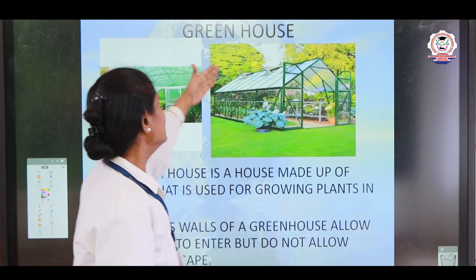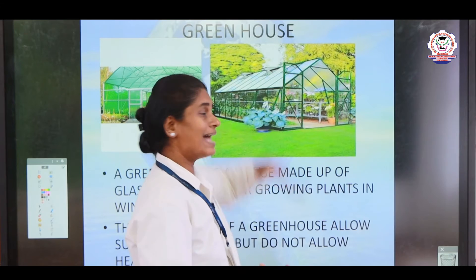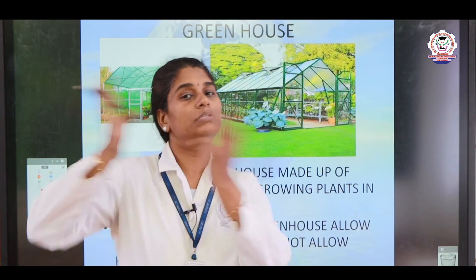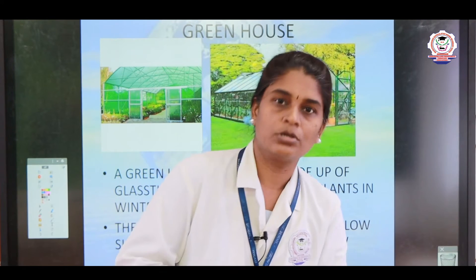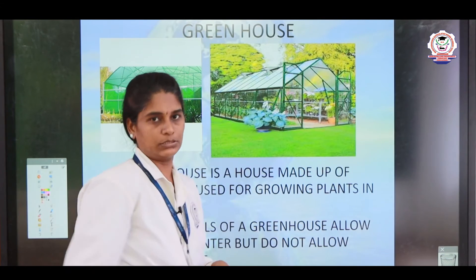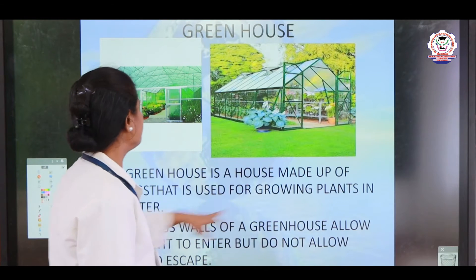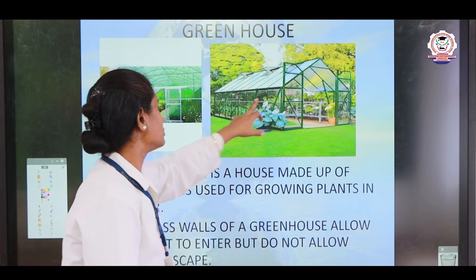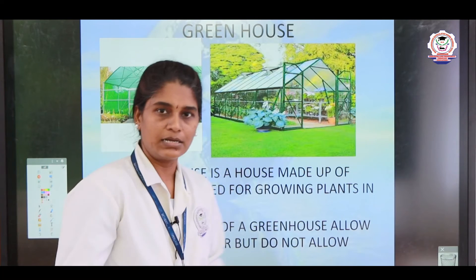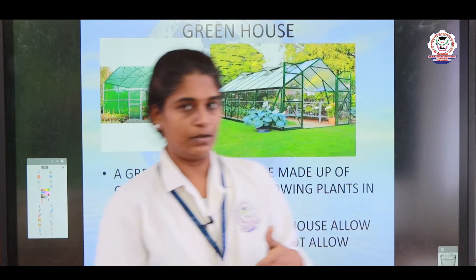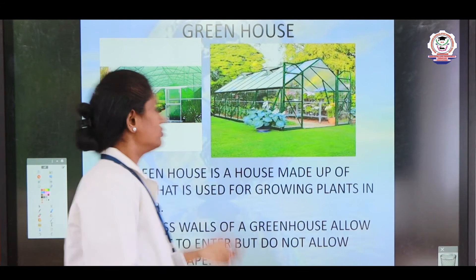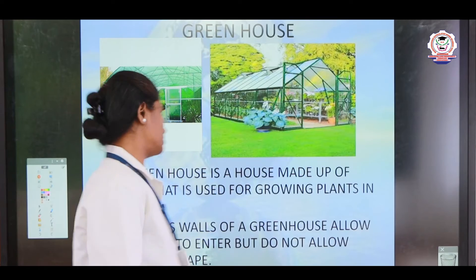The glass walls of the greenhouse absorb the heat but do not let the heat out. That's why the greenhouse is made of glass walls. You can see this type of house in botanical gardens and nursery places. This is known as a greenhouse.